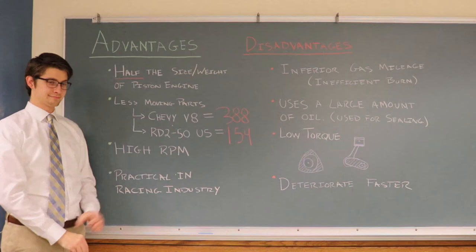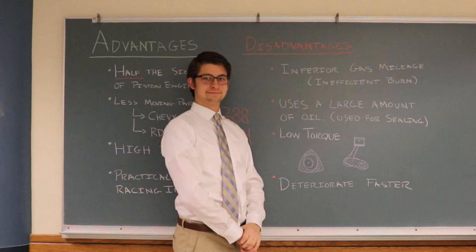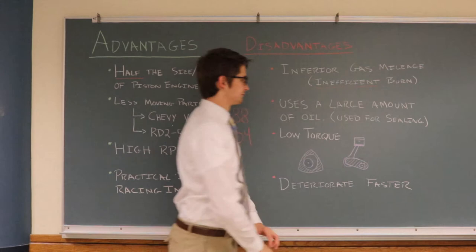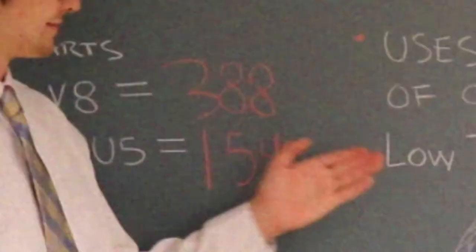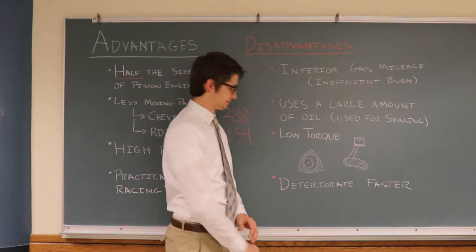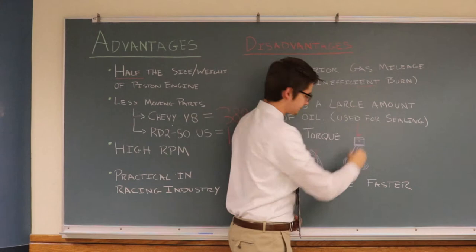Some disadvantages of the rotary engine: they get inferior gas mileage compared to their corresponding piston engines. In a two-stroke engine like this, where gas exchange occurs every cycle, oil is injected into the burn mixture to lubricate the engine instead of separate journals. Rotary engines often have low torque ratings since the moment arm of a rotor is considerably less than the moment arm of a crankshaft on a piston engine. The seals between the rotor and the engine wall also tend to deteriorate over time, especially in colder climates.